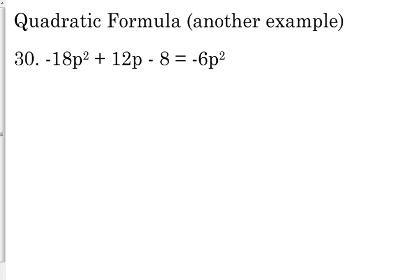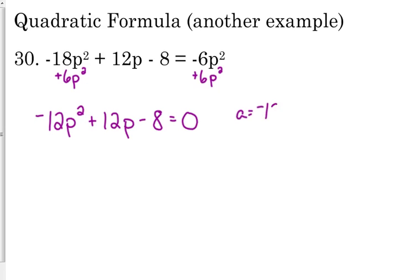You could do it either way. You should come to the same conclusion if you moved everything to the right side. It'll just look a little different in the intermediate steps. So for this one, I'm going to add 6P to both sides. So negative 18 plus 6 is negative 12P squared. Plus 12P minus 8 is equal to 0. So my A is negative 12, my B is positive 12, and my C is negative 8.